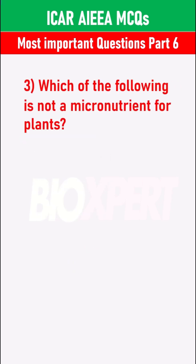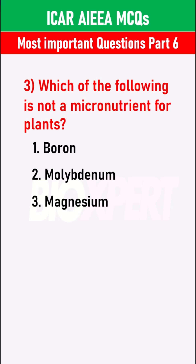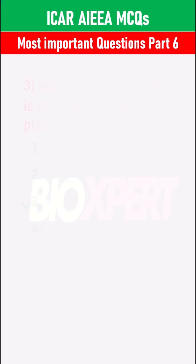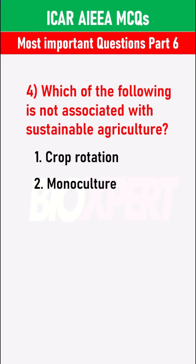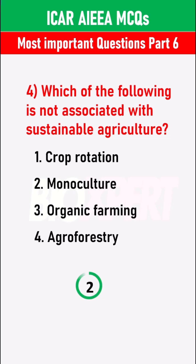Which of the following is not a micronutrient for plants? Magnesium. Which of the following is not associated with sustainable agriculture? Monoculture.